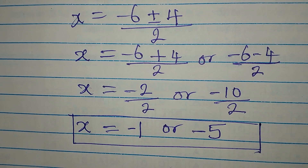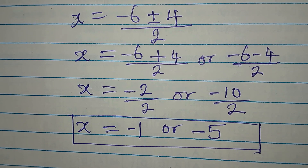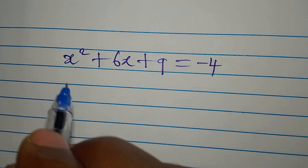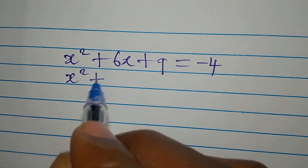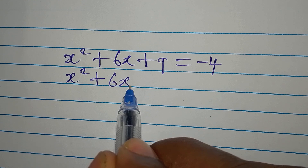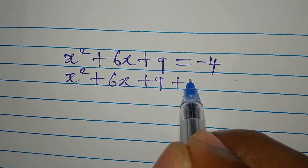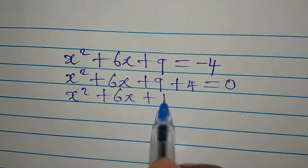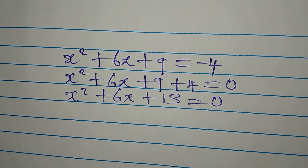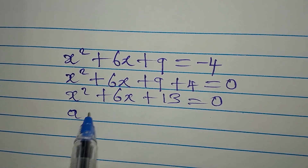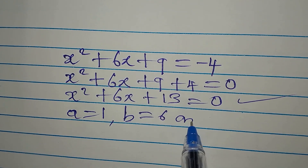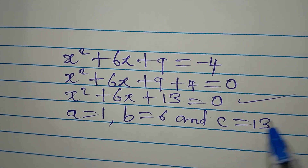Now do not forget what I said — I will go pick the other equation and deal with it. Here is that equation: x² + 6x + 9 + 4 = 0, giving us x² + 6x + 13 = 0. Like before, a = 1, b = 6, and c = 13. That is the only thing that has changed.